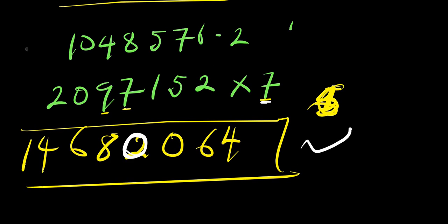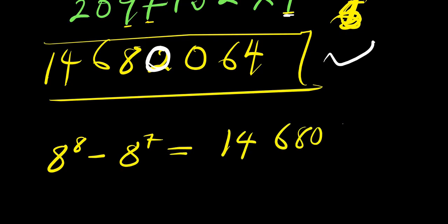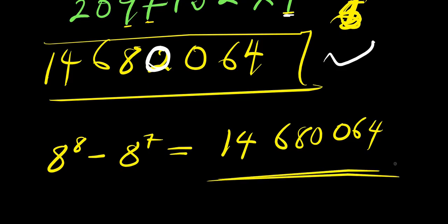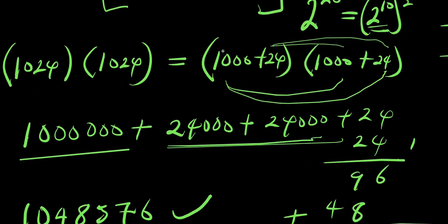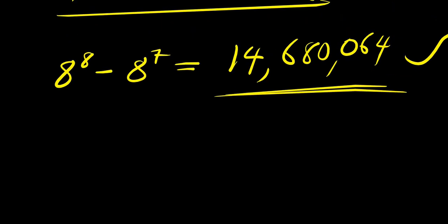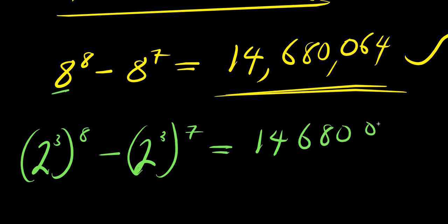So this is our answer. Our answer for 8^8 minus 8^7 equals 14,680,064. So that is 14,680,064. This is how you evaluate this without a calculator. Because 8 is 2^3, that means you have (2^3)^8 minus (2^3)^7, which equals 14,680,064.